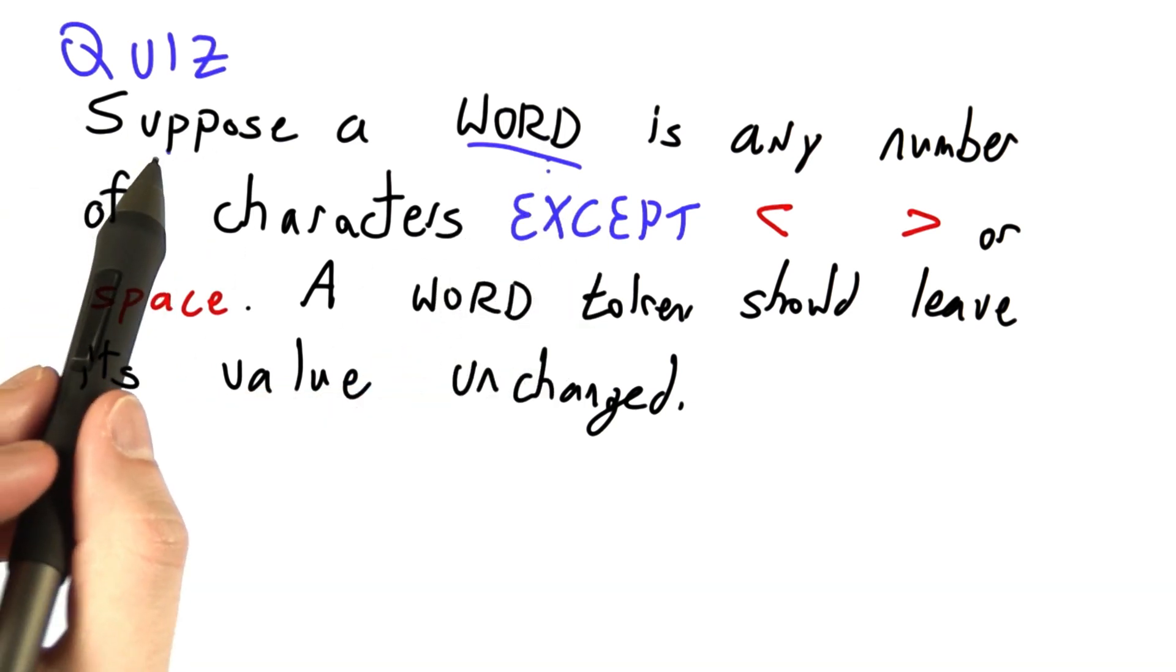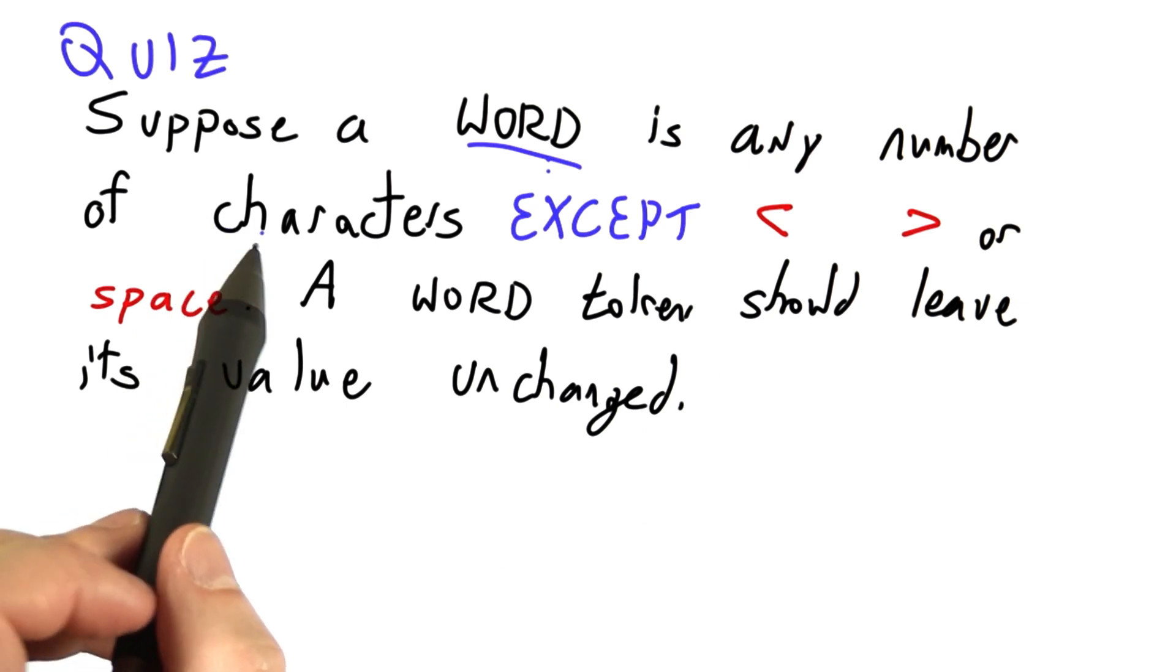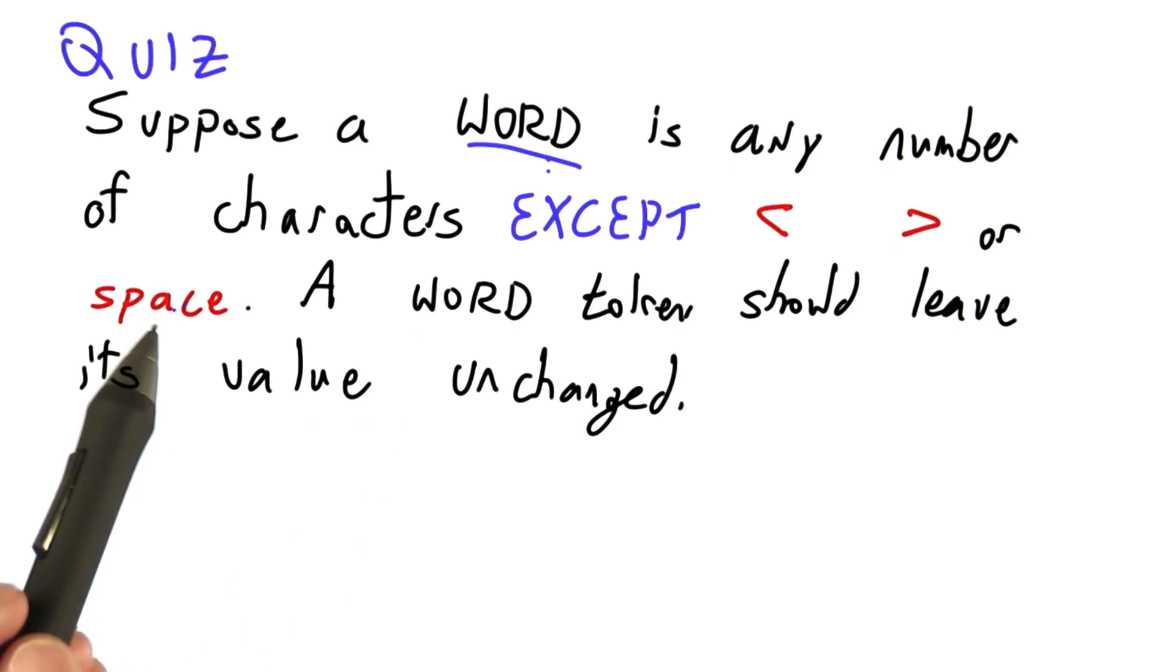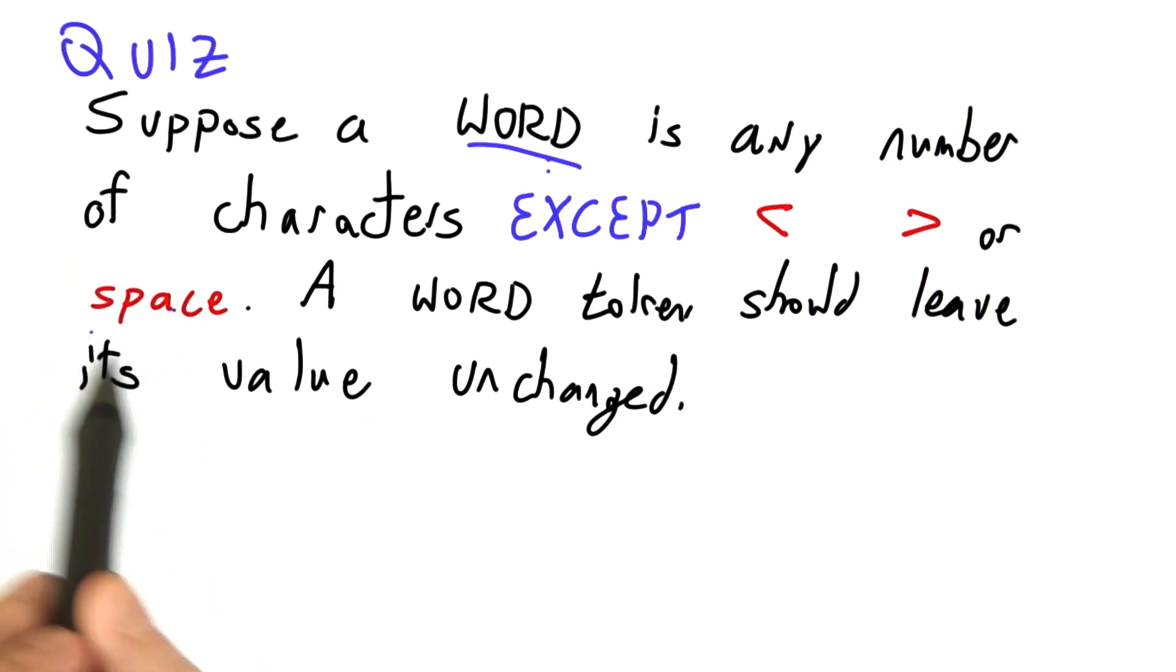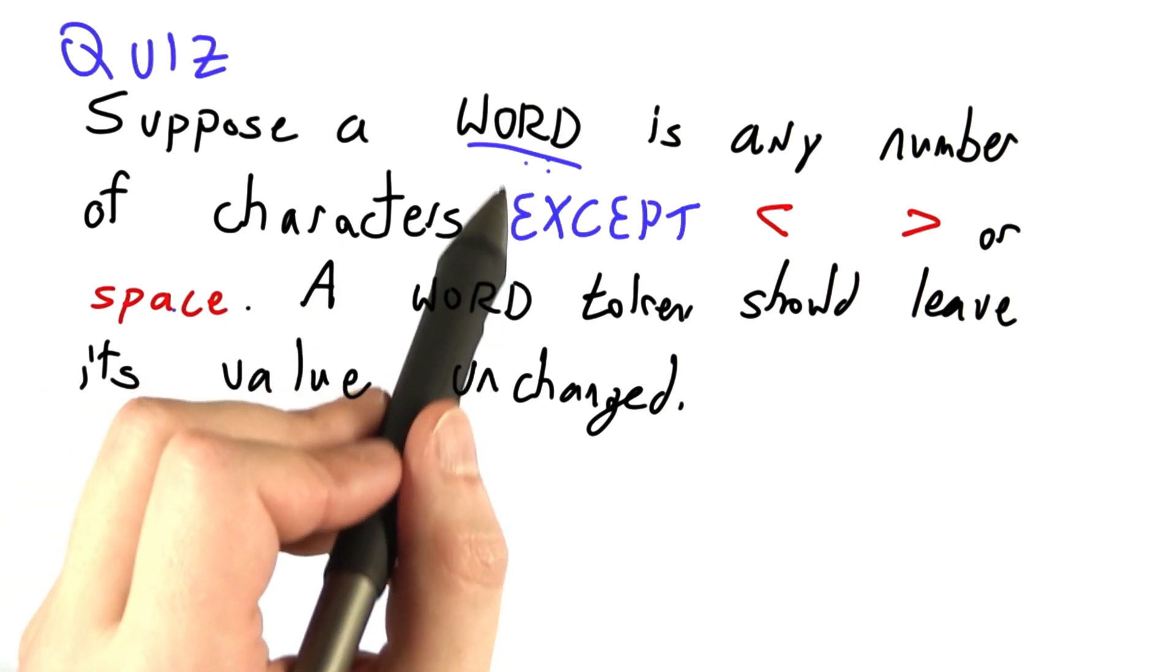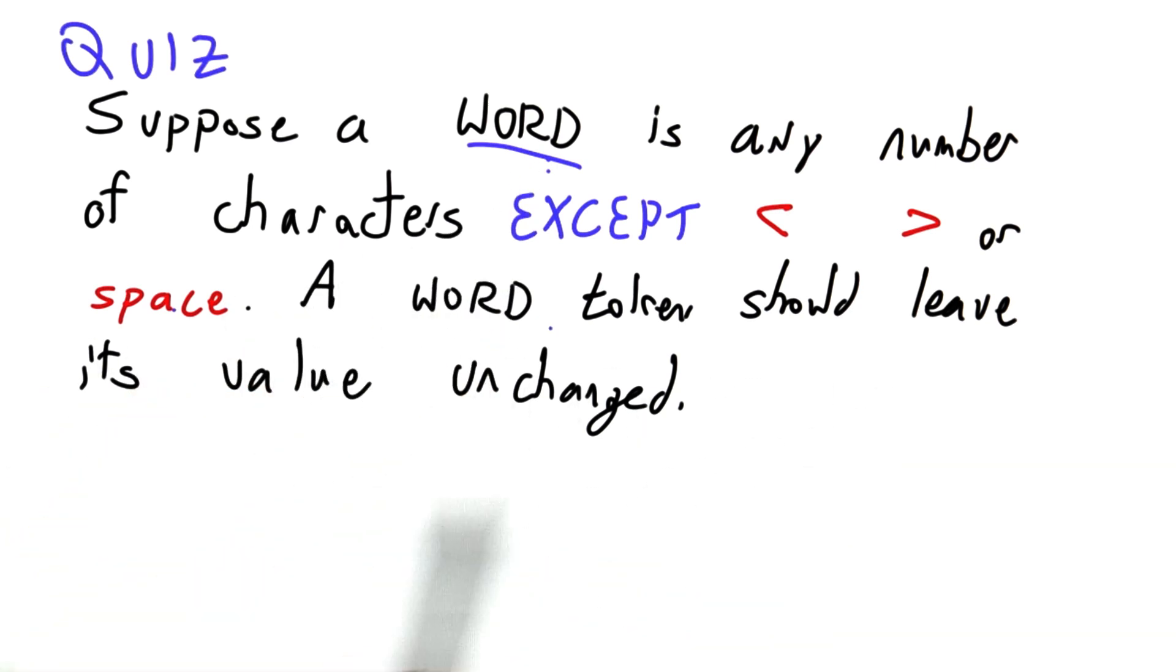Let's say that we want a word to be any number of characters except a left angle bracket, a right angle bracket, or a space. And here I really mean the single character pressing the space bar, not this five character word. But it's hard to write out. And when you're writing your function to match word tokens, you should leave the value unchanged. So submit a definition for T underscore word using the interpreter.